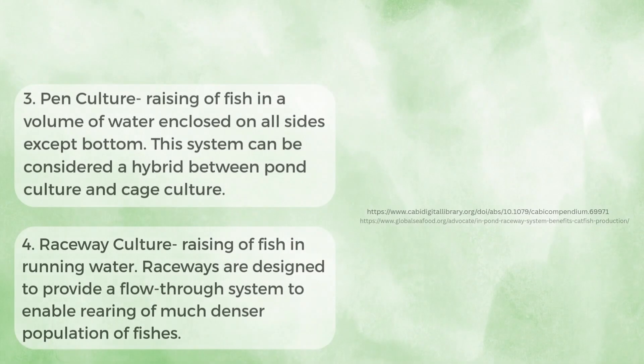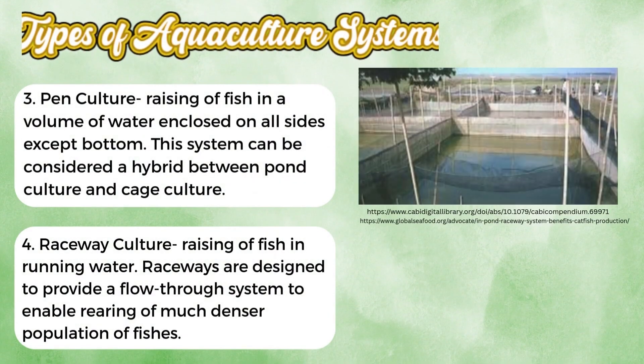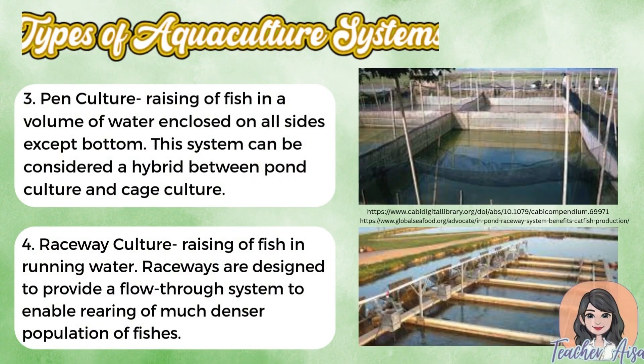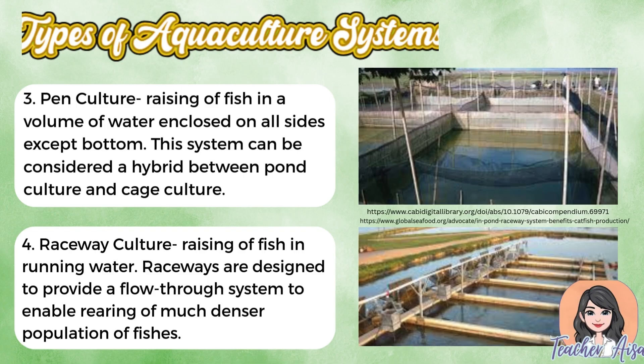We also have pen culture, where fish are raised in a volume of water enclosed on all sides except the bottom. This system combines features of both pond and cage culture, making it ideal in shallow lakes and coastal areas. Another type is raceway culture, where fish are raised in flowing water through a channel or tank. Because of the continuous water movement, this system can support a higher number of fish — commonly trout or other freshwater species.